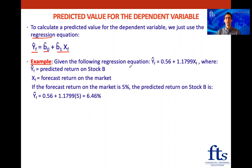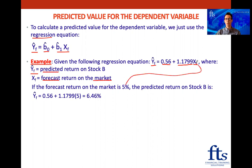So if they give us this regression equation, our Yf is the predicted return on stock B. We know 0.56 is our estimated intercept, and then we have our estimated slope coefficient multiplied by Xf, our independent variable — the forecast return on the market. If they tell us the forecast return on the market is 5%, we plug in 5% and get our forecast return for stock B: 6.46%.